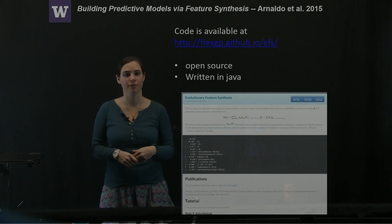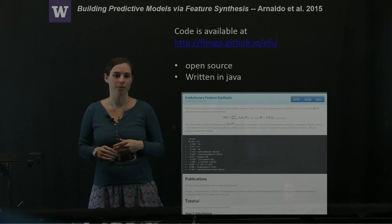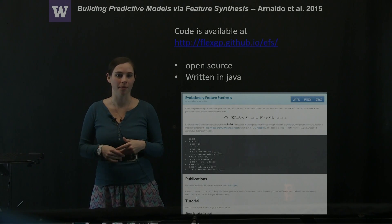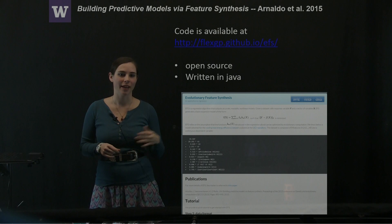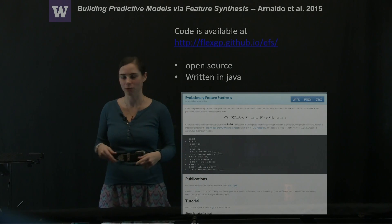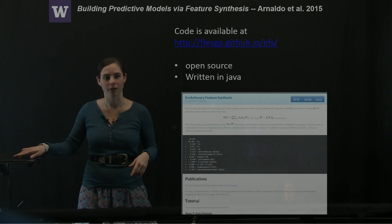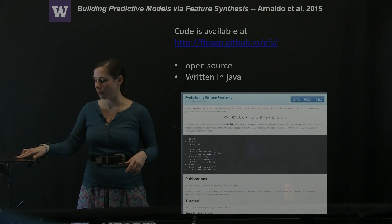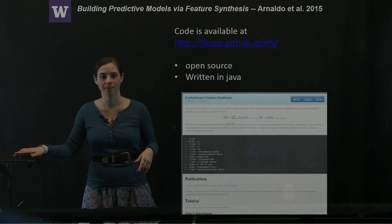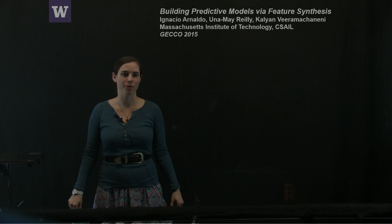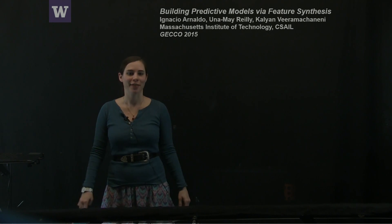The authors have made their code available at this website. It's open source and on GitHub. It's written in Java. And they have a short tutorial on how to do at least one of the problems, the heating and cooling problem that's in the manuscript. So that's been my presentation of building predictive models via feature synthesis. Thank you.